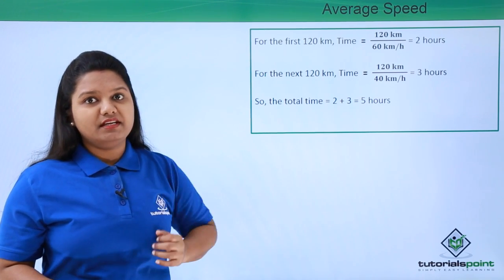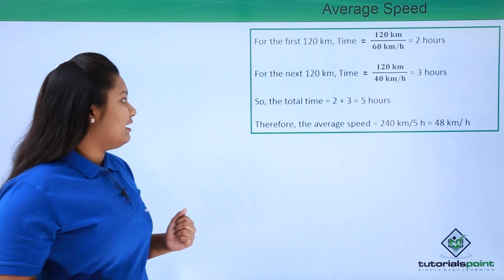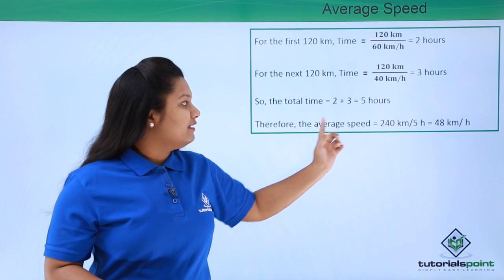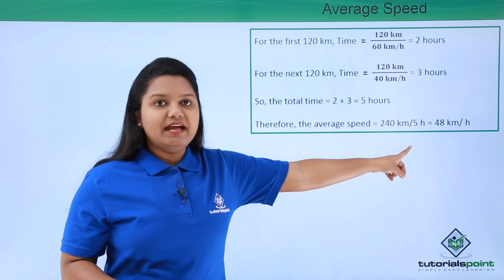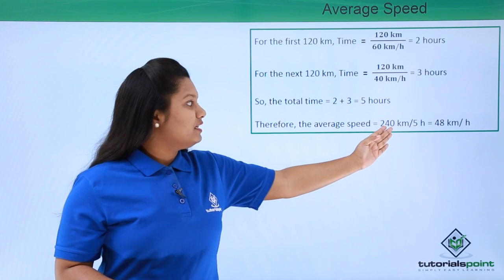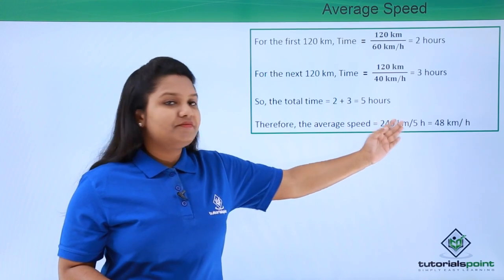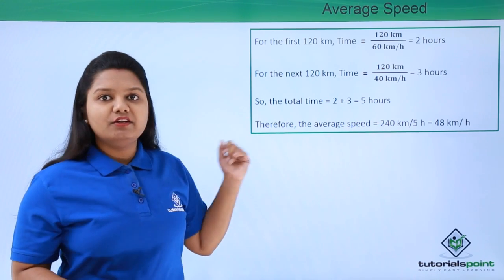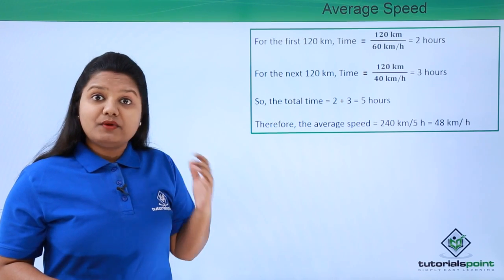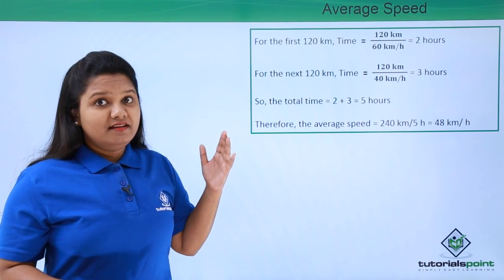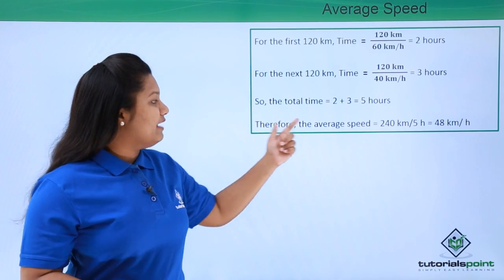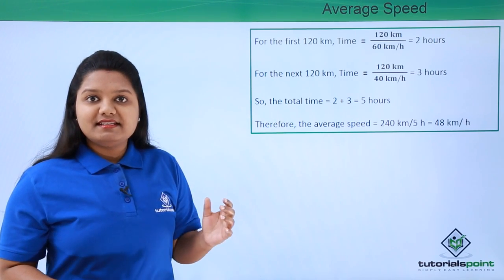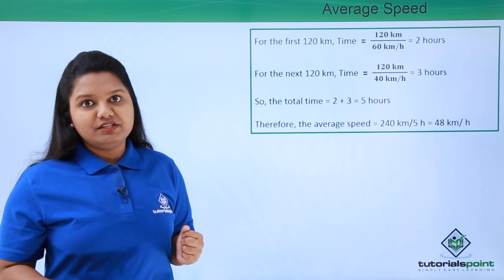Now that we have the total distance and total time, we can apply the formula. The average speed is 240 kilometers divided by 5 hours, which equals 48 kilometers per hour. However, the question asks us to find the average speed in meters per second, which is the SI unit of speed.